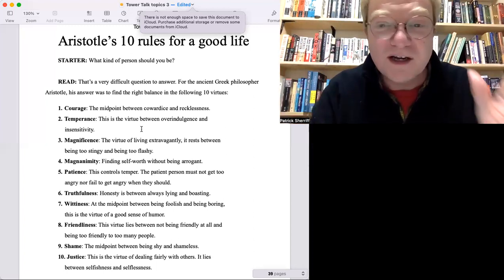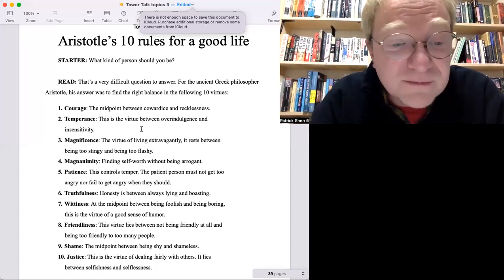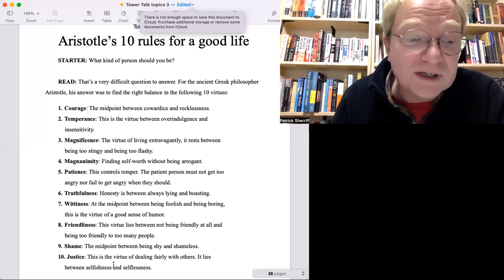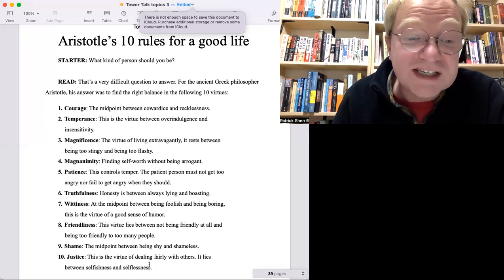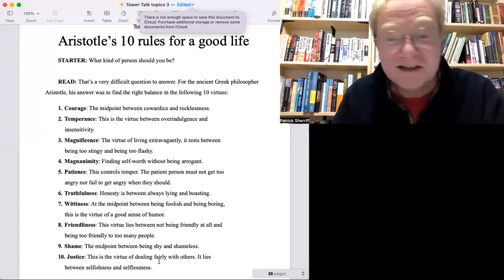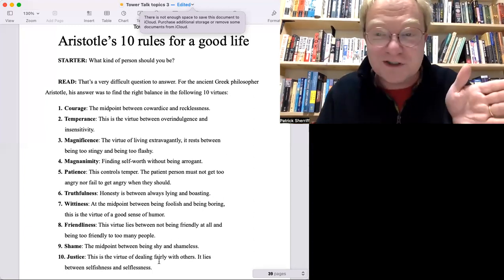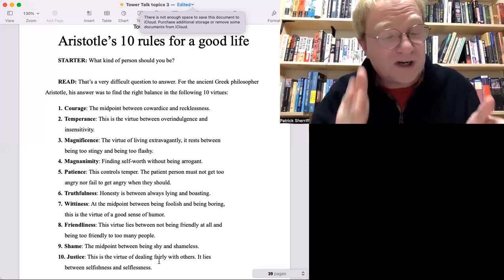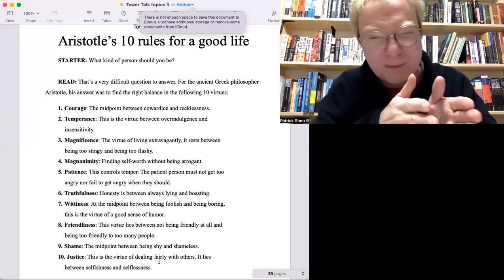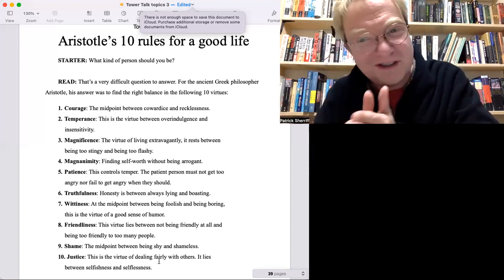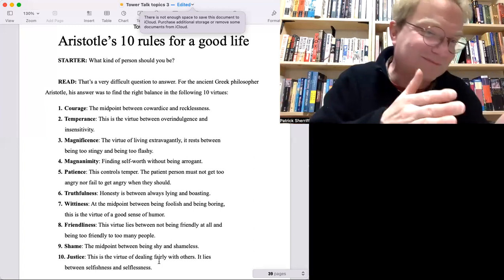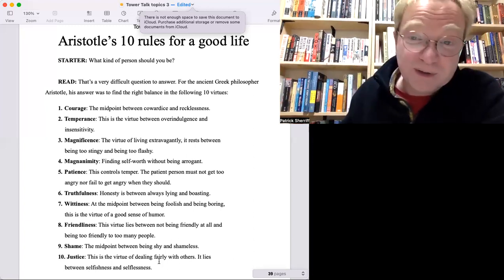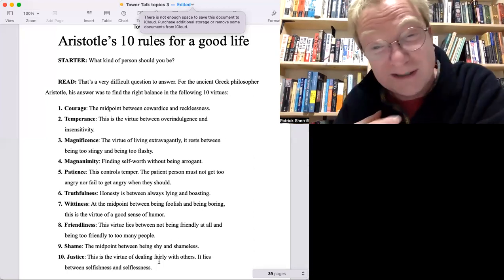And finally, number 10: justice. This is the virtue of dealing fairly with others. It lies between selfishness and selflessness. So on one level you can be super selfish, on the other level only caring about other people. Well, Aristotle said you have to be in the middle. You have to be a little bit selfish, but not too selfish. A little bit caring about other people, but not always just caring about other people and not caring about yourself. You have to be a little bit selfish.